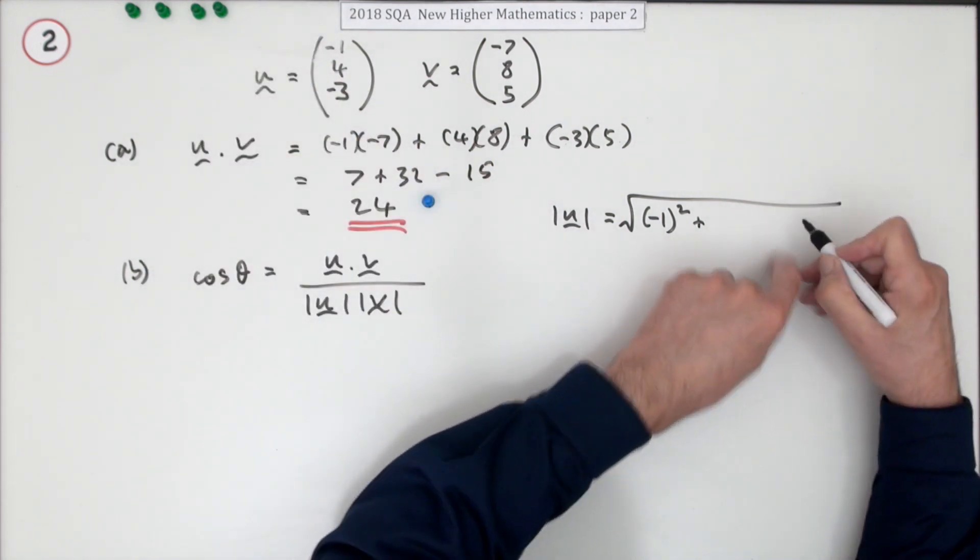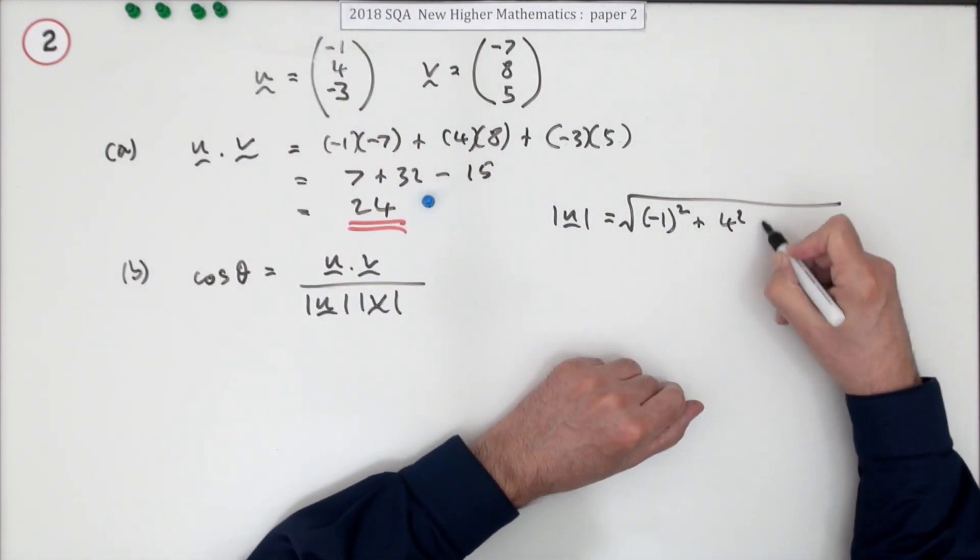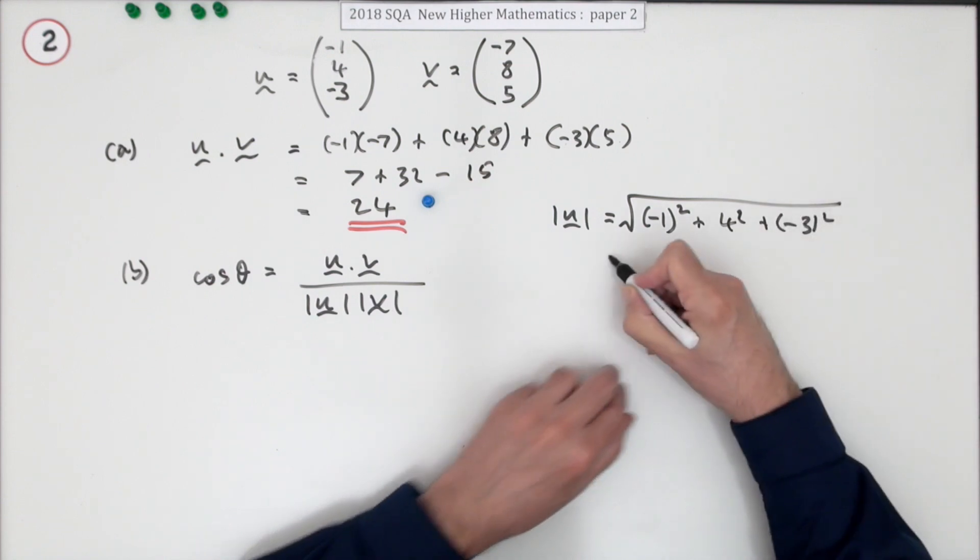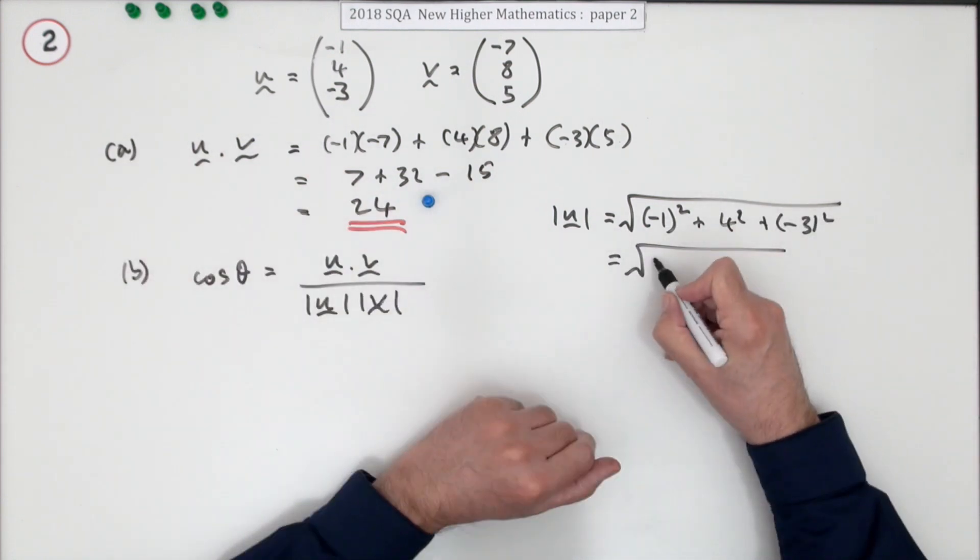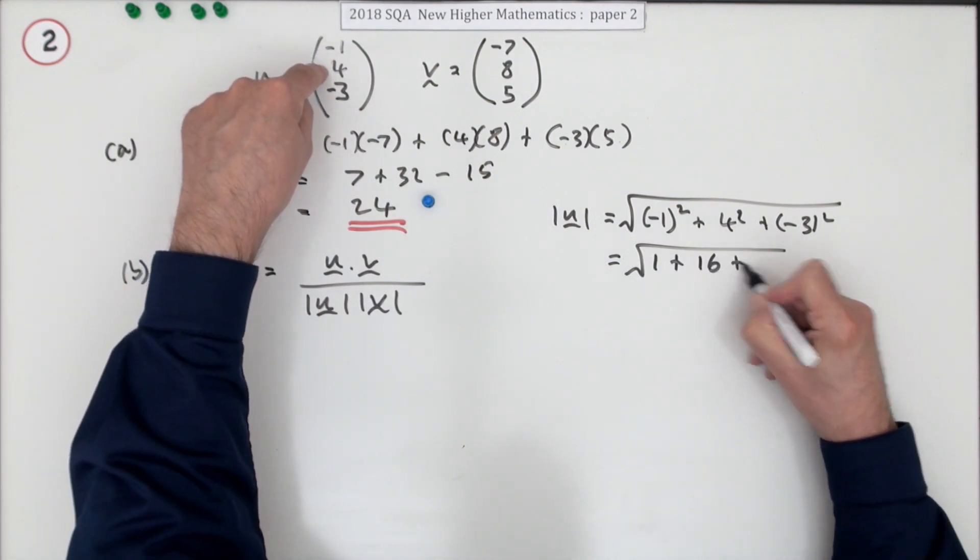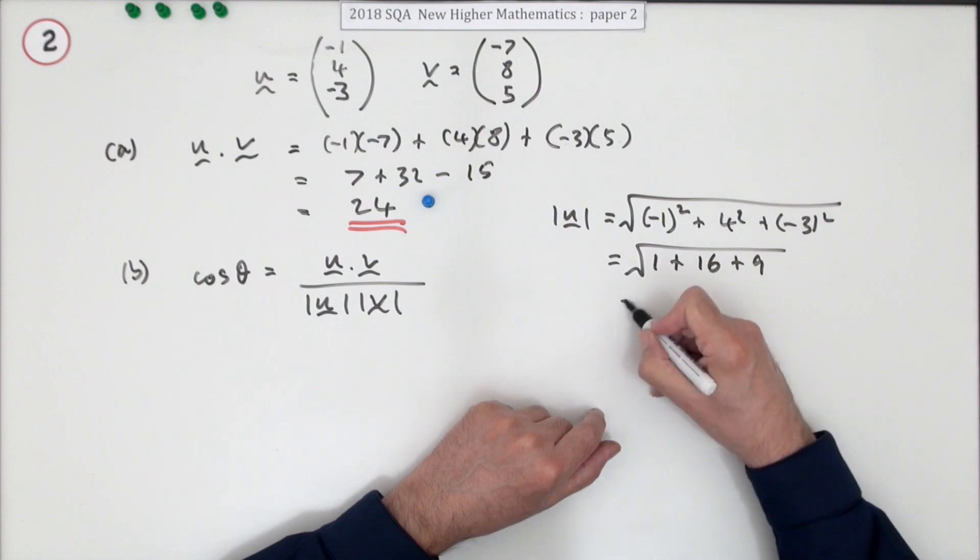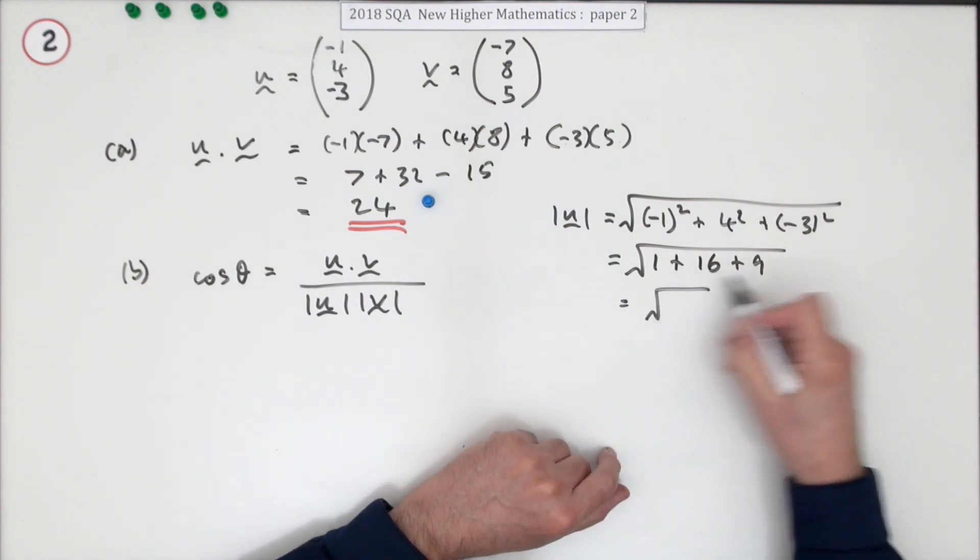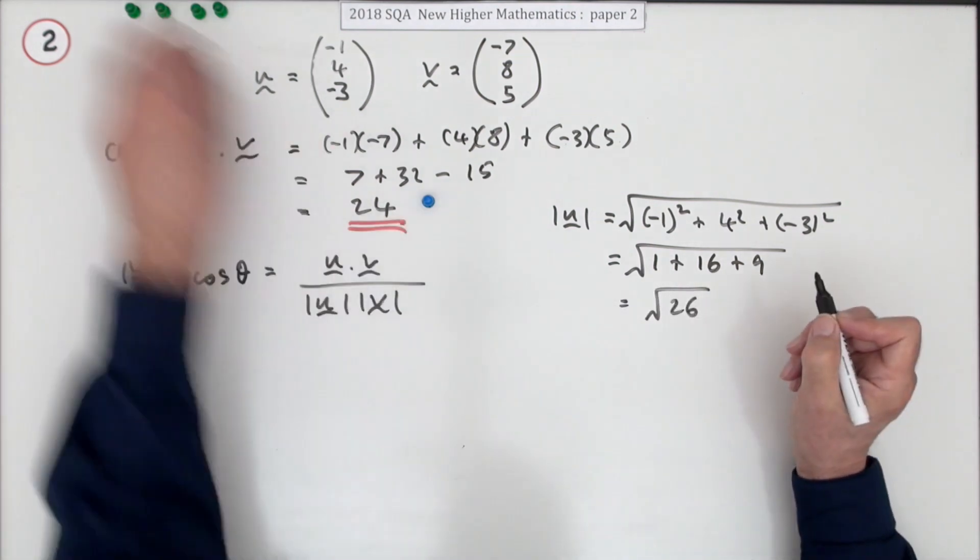Plus four squared plus negative three squared. I don't see what's wrong with just saying the square of that's one, the square of that's 16, and the square of that's nine, making the magnitude altogether root 26. That certainly gets a mark.